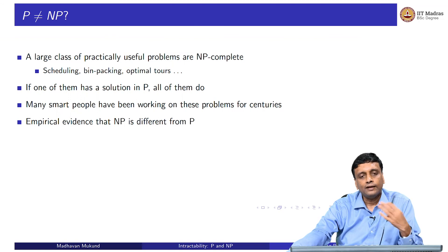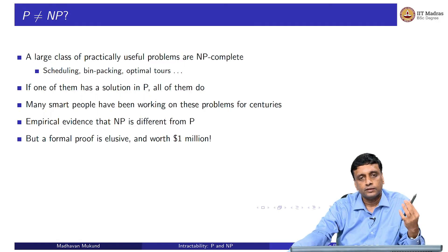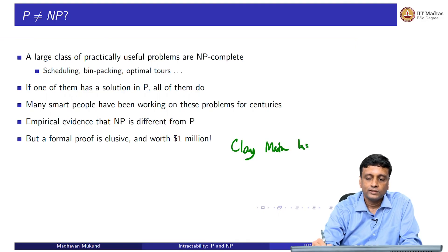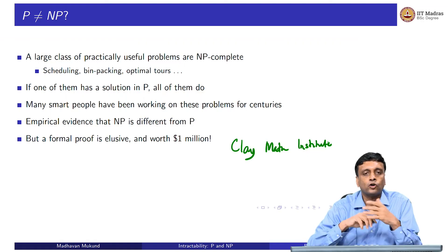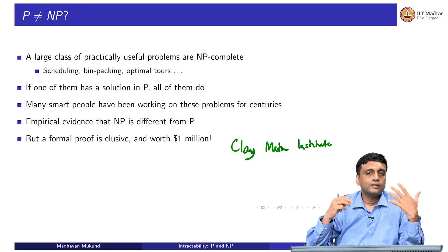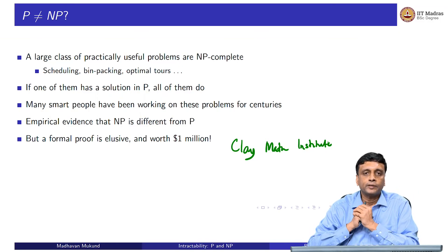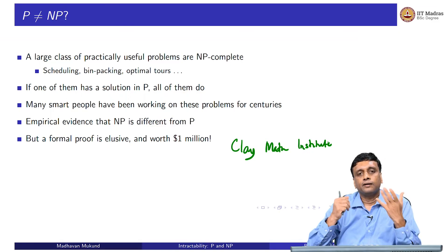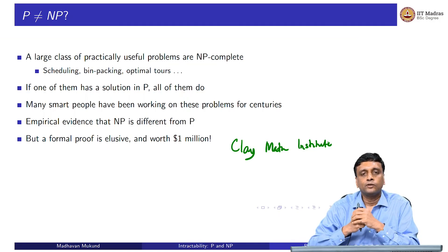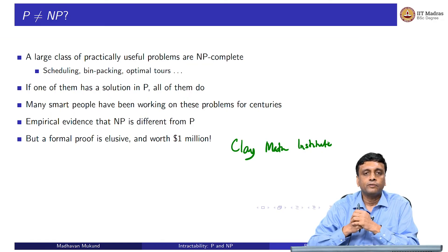Therefore we have empirical evidence that NP is different from P, but we have yet not been able to prove this. This is one of the celebrated open problems in mathematics — the question of whether P is not equal to NP — and it currently carries a one-million-dollar prize. It is probably the big unsolved problem in computing. The Cook-Levin theorem is approximately 40 years old, from 1971, and for the last 40 years, even after formulating the problem and understanding NP-completeness, we are no closer to understanding whether this is true or not. We strongly believe P is not equal to NP, but we cannot prove it.